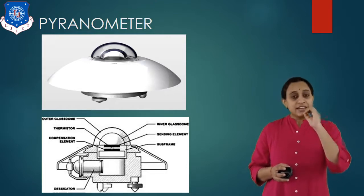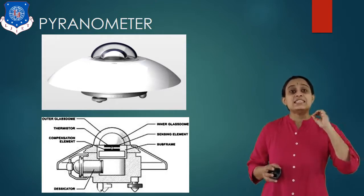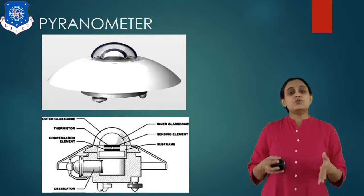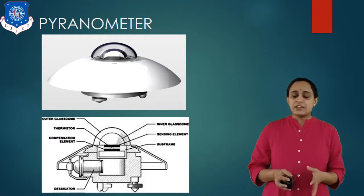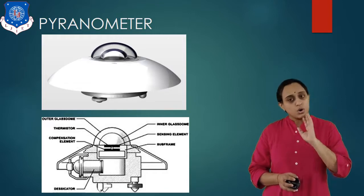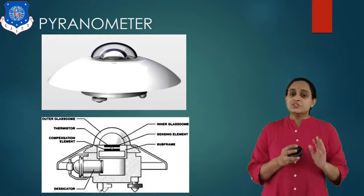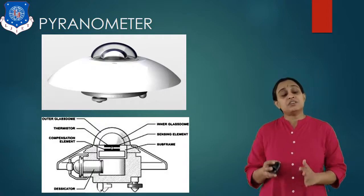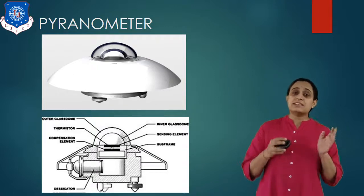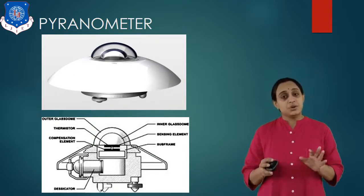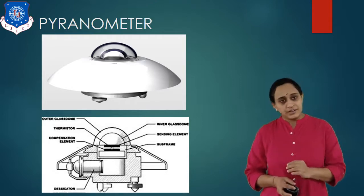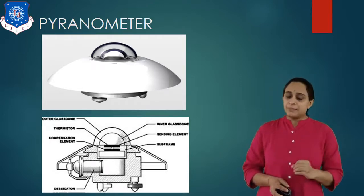Incident radiations means radiation at a given instant. When calibrated in terms of watts per square meter, it gives the measurement of radiations. These sensors absorb all solar radiations in the range of 300 to 50,000 nanometers wavelength, meaning they can measure both beam and diffuse radiation. The sensor is covered with a glass dome, which prevents the leakage of radiations.